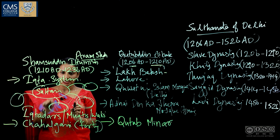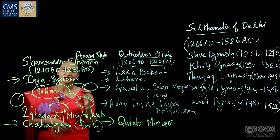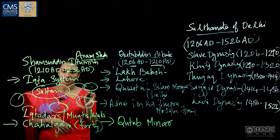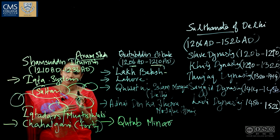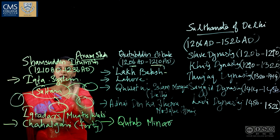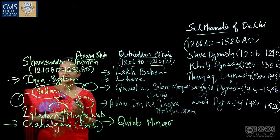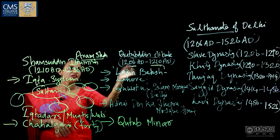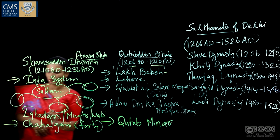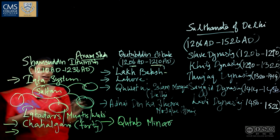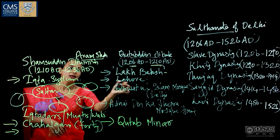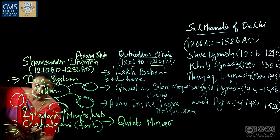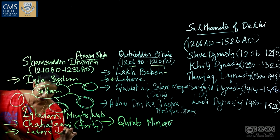The Chahalgani helped the Sultan in administration and played an important role in the governance of the state. Later, the Chahalgani was dissolved by Ghiyasuddin Balban, another important ruler of the Slave Dynasty. Iltimish also transferred the capital from Lahore to Delhi.